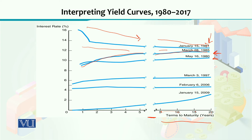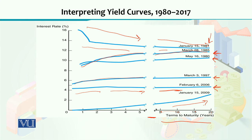Similarly, the March 16, 1980 yield curve is also upward sloping. Then the March 3, 1997 yield curve is also upward sloping. The 2006 yield curve shows a gradual rise and then becomes constant — it becomes a horizontal straight line. And the January 15, 2009 yield curve again shows an upward movement. So based upon these different yield curves using real-time data spanning 1980 to 2017, we can say that the three facts discussed earlier have been validated.